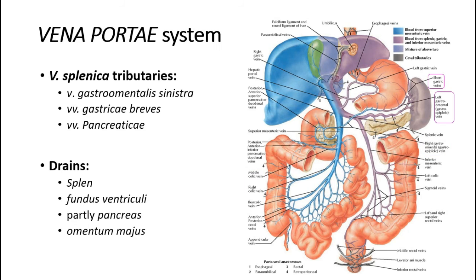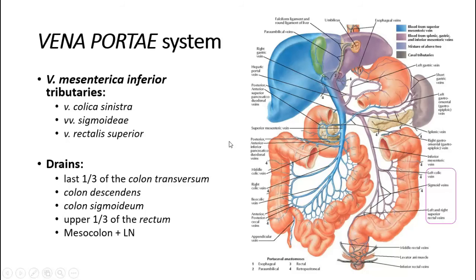The vena splenica is the second root of the portal vein. It runs the same course as the artery, starting at the hilum splenis, then going along the posterior wall of the pancreas under the artery, crossing the aorta, and connecting with the vena mesenterica superior to form the venoporta. With its tributaries, it drains the spleen, the fundus ventriculi, part of the pancreas, and the omentum minus. The third root is the vena mesenterica inferior, which follows the arteria mesenterica inferior and with its tributaries collects blood from the upper rectum, sigmoid, colon descendens, and the last third of the colon transversum, starting as the vena rectalis superior.